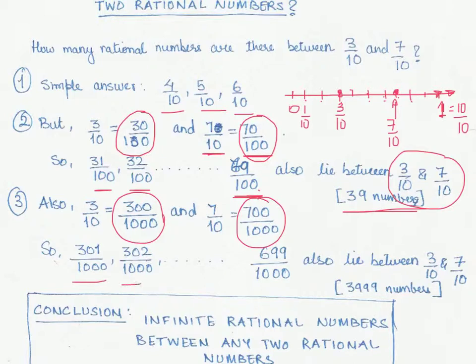...and so on all the way to 699 by 1000. All these numbers also lie between 3 by 10 and 7 by 10, and if you were to count, there are actually 3999 such numbers.